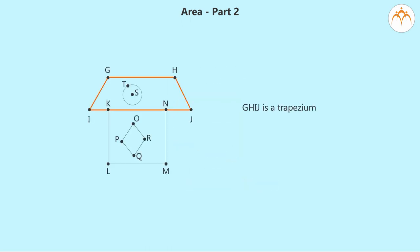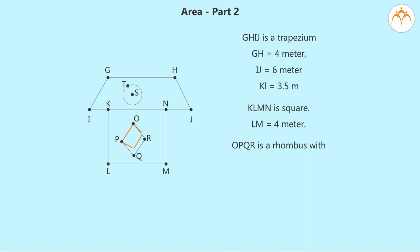GHIJ is a trapezium. GH equals 4 meters. IJ equals 6 meters. KI equals 3.5 meters. KLMN is a square. LM equals 4 meters. OPQR is a rhombus with OQ equal to 80 centimeters, PR equal to 60 centimeters.